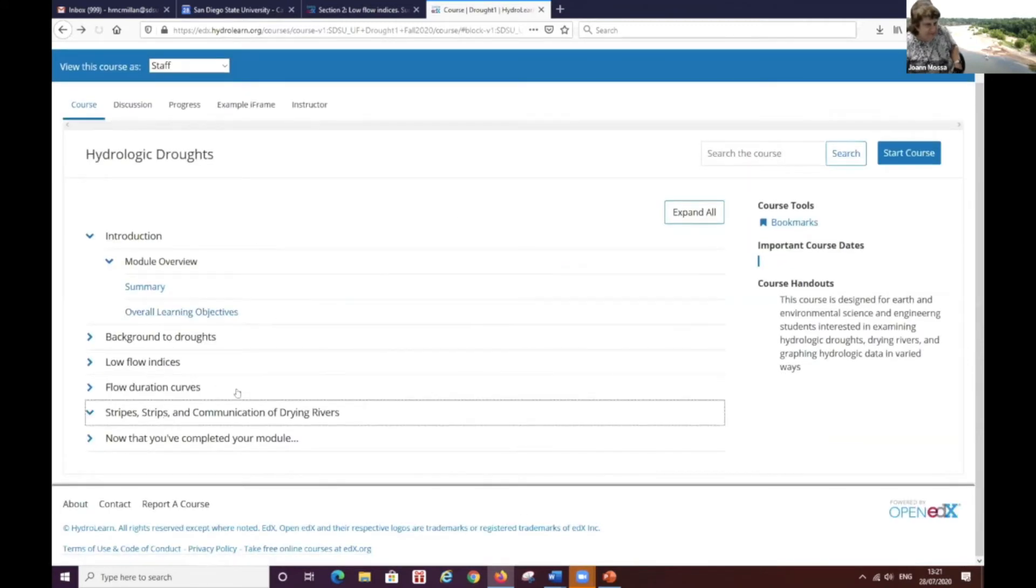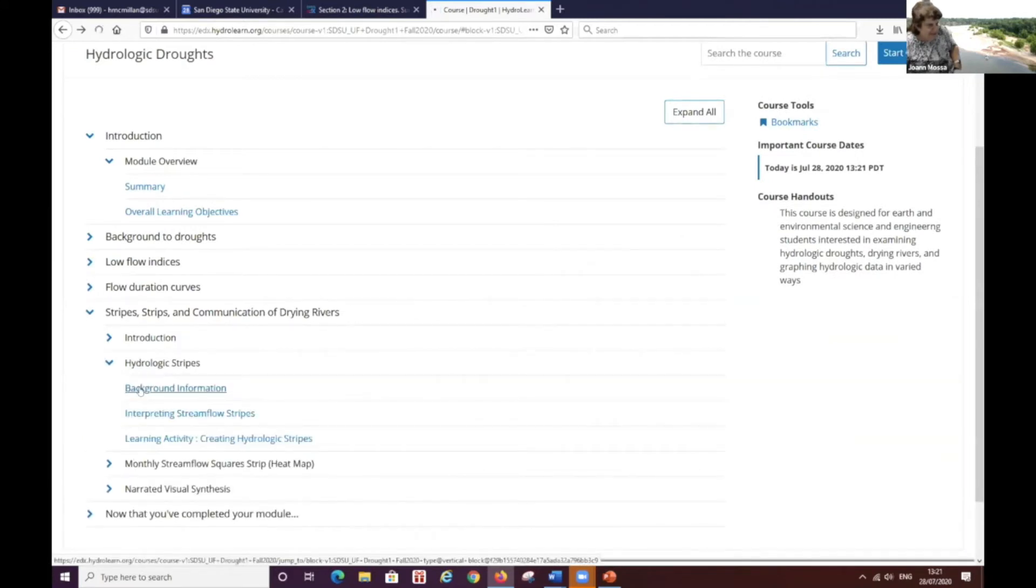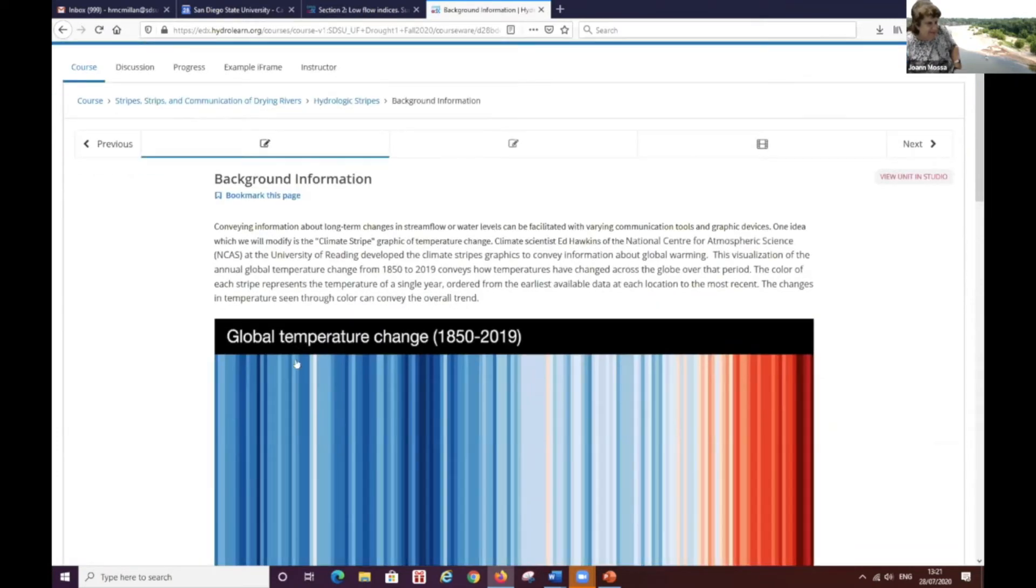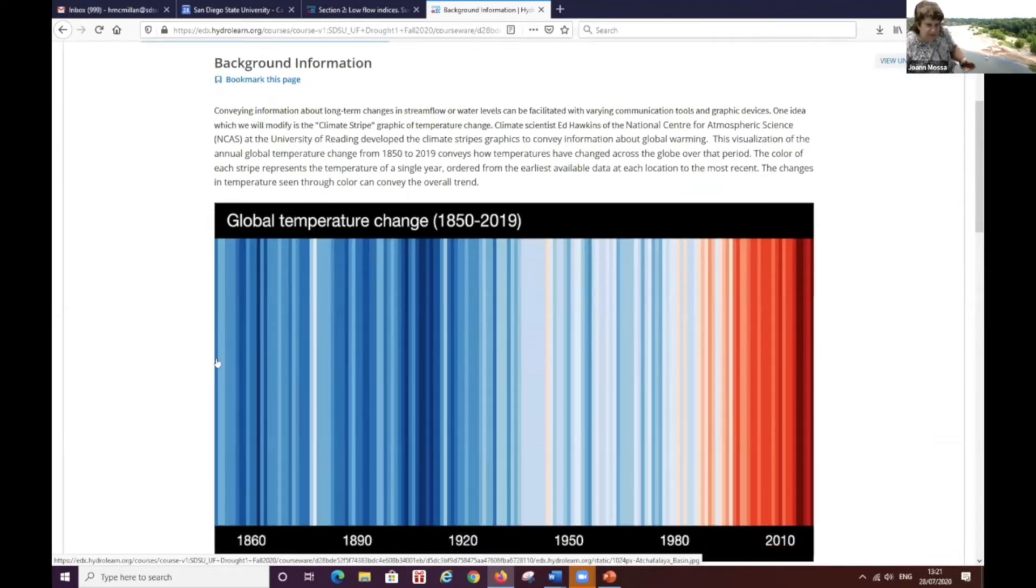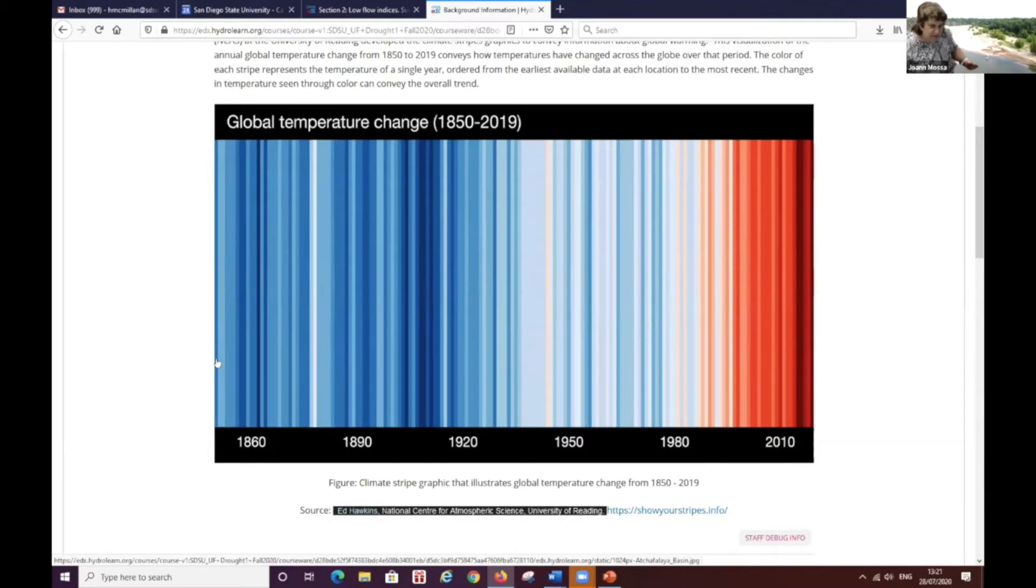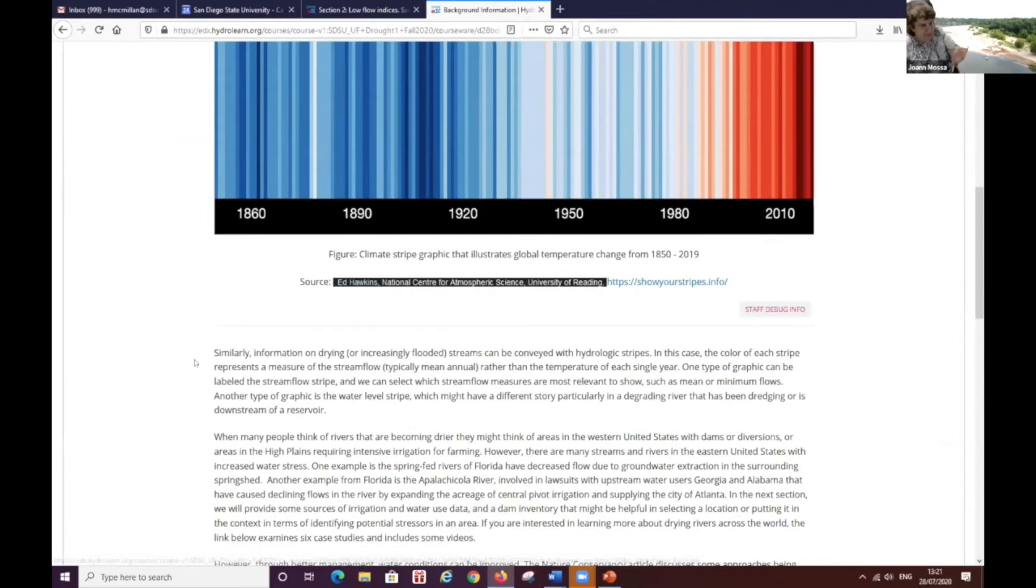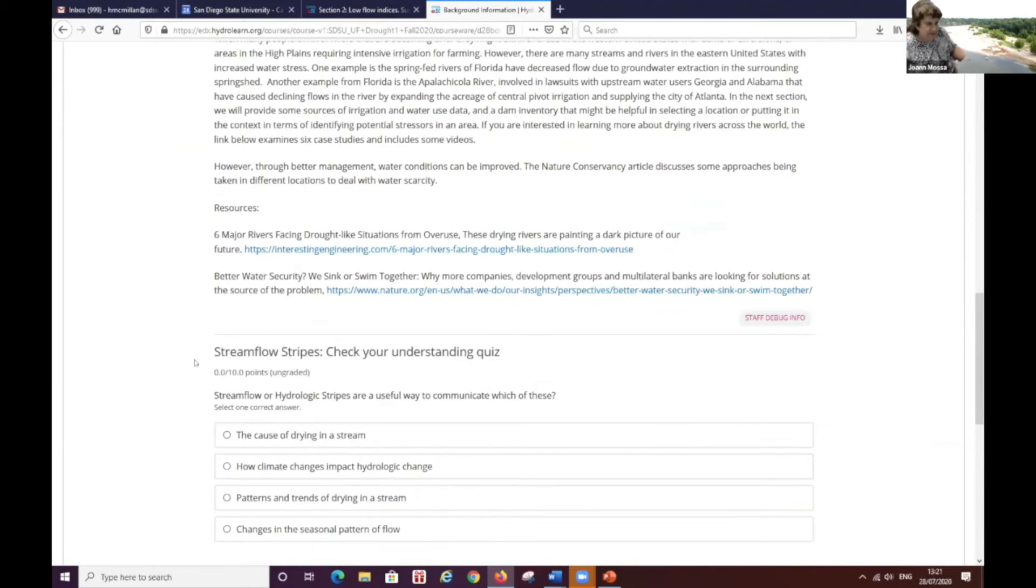And so this is, start with stripes, I guess. And so the idea behind this is this is an idea that was adapted from the climate stripes, which is a communication mechanism of trying to show that the world is warming through colors. And so you can see the blues changing to reds. And so I'm applying this same method to stream flow.